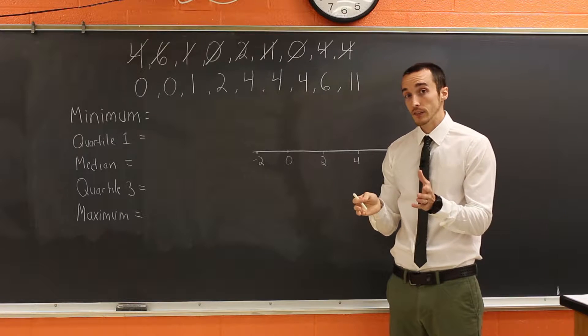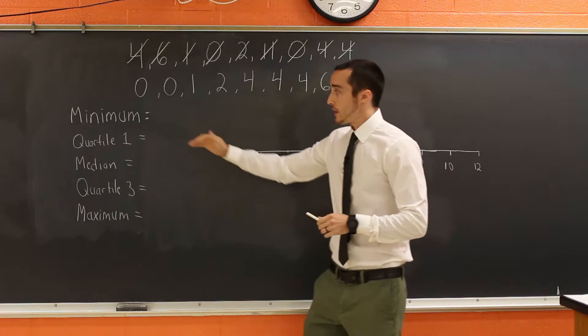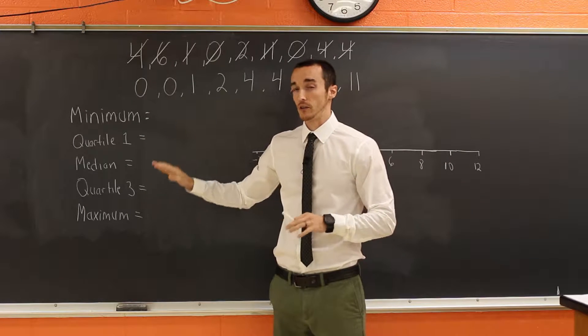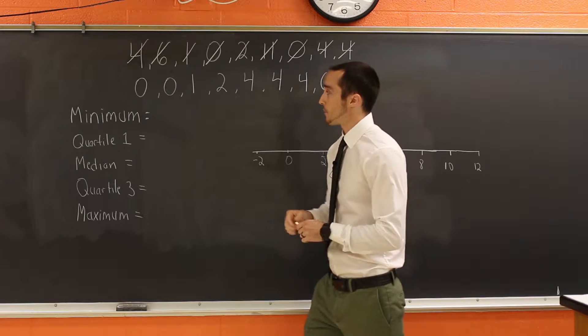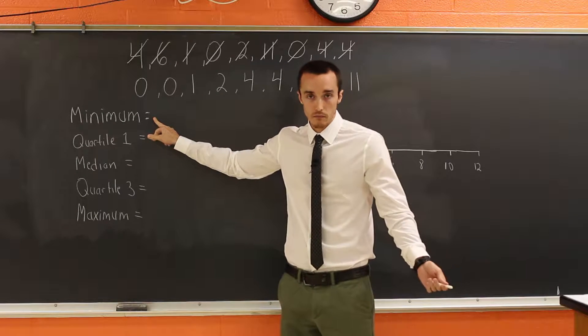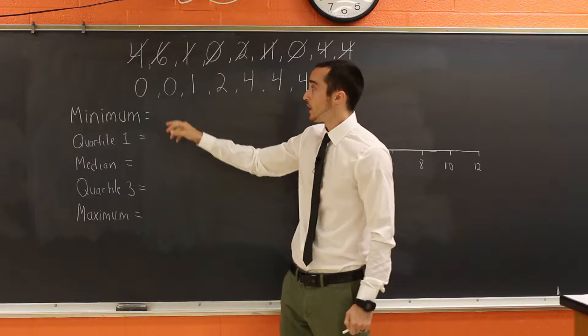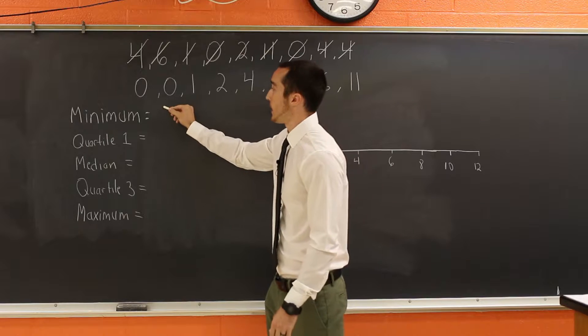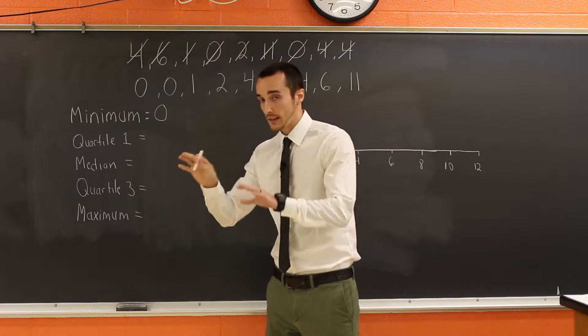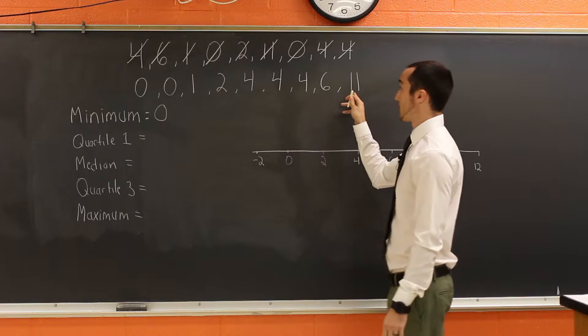These are the five important values and let's talk about what each one of these is and how you can find it. So the minimum is not surprisingly the smallest number that you have here. Now that they're in order, you can readily see that that is a zero. So our minimum for this data set is a zero. And again, that represents zero breakups. The maximum is all the way over here at 11. So that's the highest number that we have.